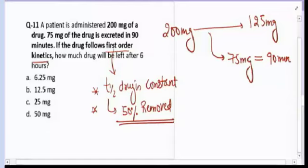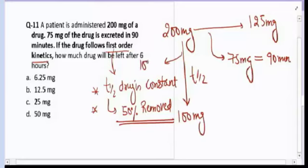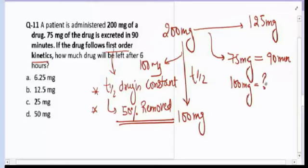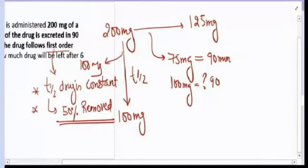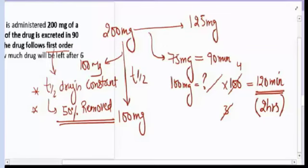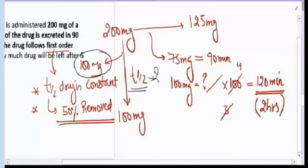To calculate the half-life: we know 75 mg is removed in 90 minutes, so 100 mg will be removed in 90/75 × 100 = 120 minutes, or 2 hours. That means 50% of 200 mg is removed in 2 hours, so the half-life is 2 hours. In next 2 hours, 50 mg will remain; in the following 2 hours, 25 mg will remain.